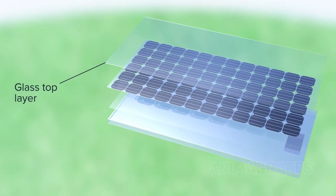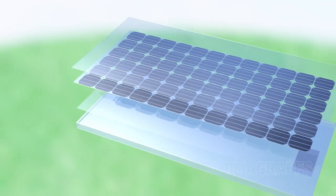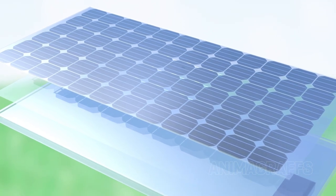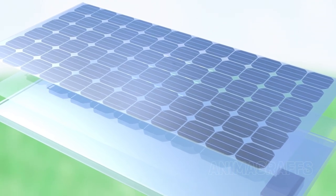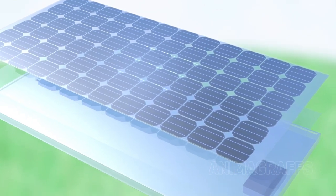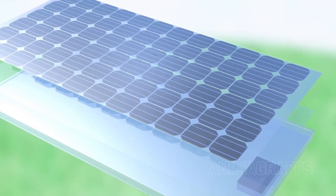Glass top layer. A thick layer of low iron glass protects the cell from outside conditions, and provides structural strength while also allowing maximum light passage. Low iron reduces the reflective impurities that give normal glass a faint greenish-blue tint.